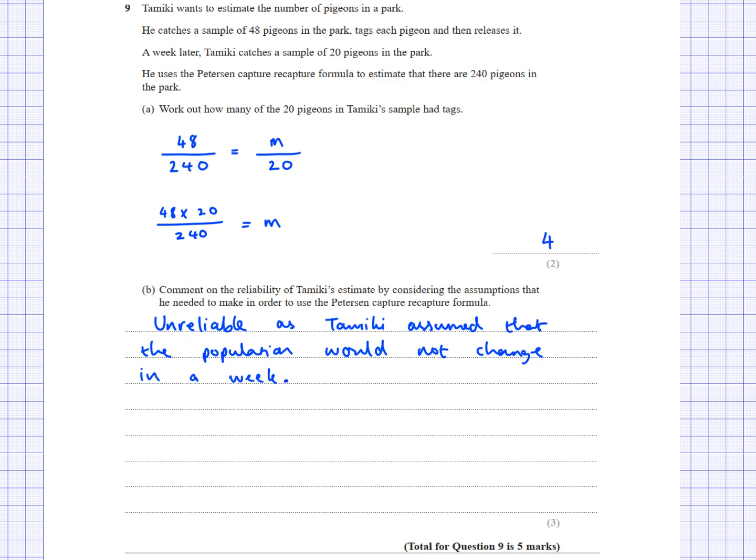I feel like I've said two things here, but this is for three marks. It does say I should consider assumptions he needed to make. So I will mention the other assumption about the tags. Tamiki assumed that the tags would remain. I made a comment on the tags, I made a decision on the reliability which I said unreliable, and I linked that to the assumption that the population would have had to have remained the same for this method to work.